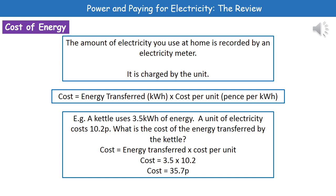In the question they will always tell you the cost per unit, so you only need to work out the energy transferred, which we did previously. For example, a kettle uses 3.5 kilowatt hours of energy and the unit of electricity costs 10.2 pence. What is the cost of the energy transferred? We just do 3.5 times 10.2, which gives us 35.7 pence.